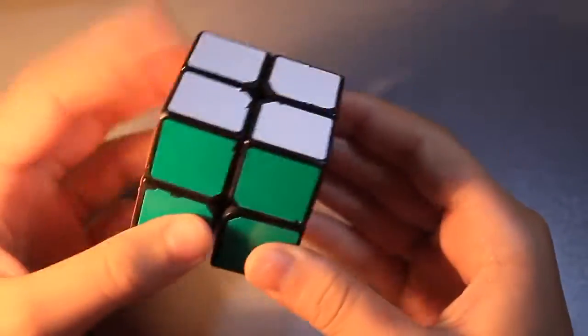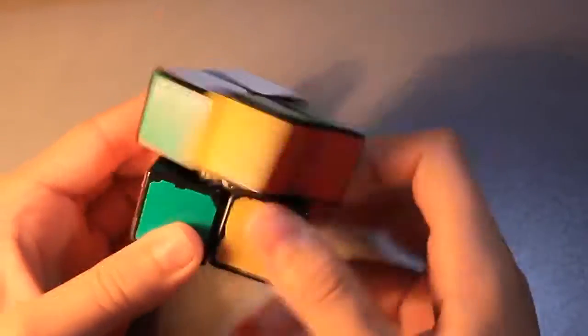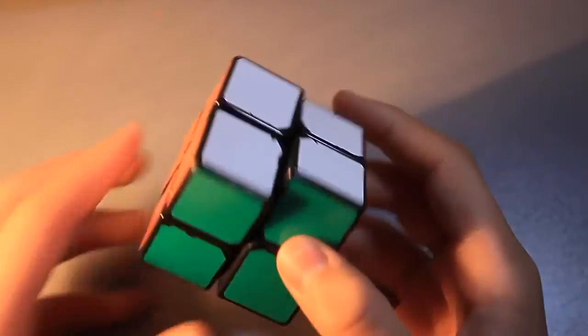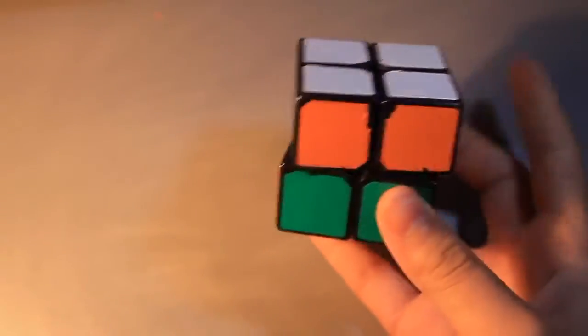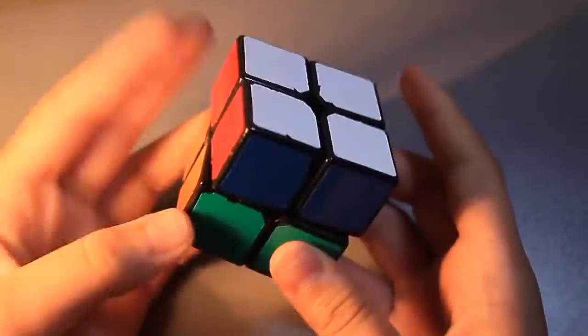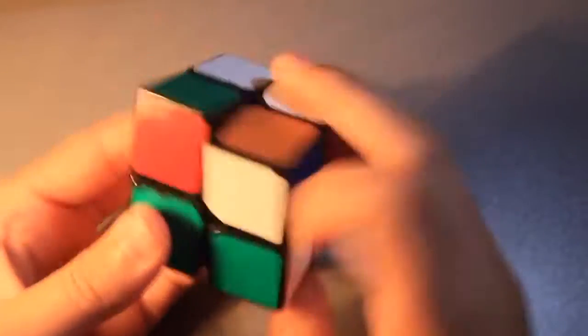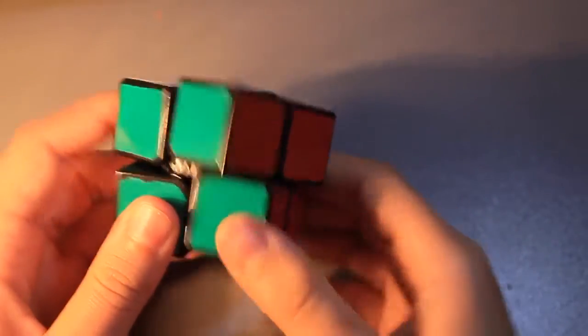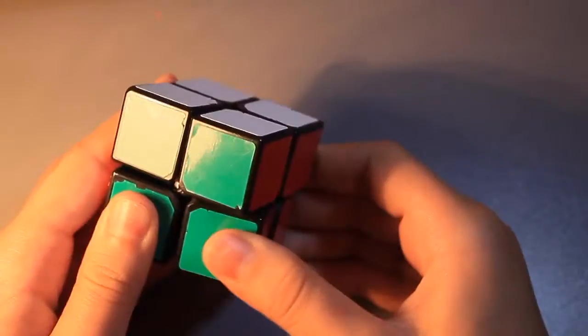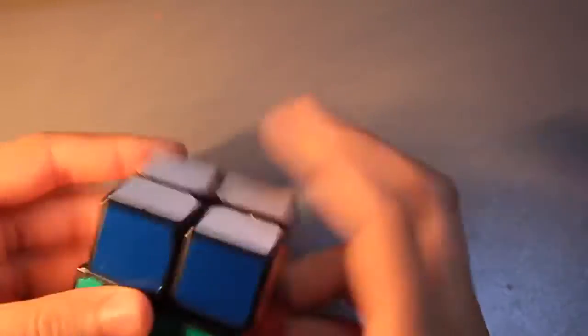So this is my current 2x2 main. It's the Shang Shao 2x2. I had a Ling Po, but I can't find it. It's somewhere in the house and I cannot find it. So this is what I'm stuck with. I also have another Shang Shao 2x2, but this one's modded, so I like this one better. It has about that much corner cutting, only a tiny bit of reverse. It's pretty fast.